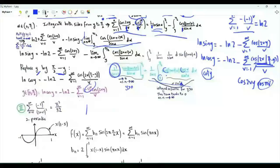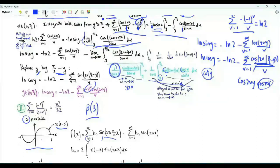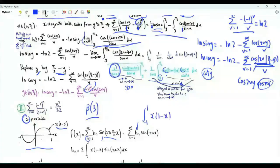Another result we need is the Dirichlet beta function evaluated at 3. One way to obtain it is to compute the Fourier series of the periodic function of period 2, which on the interval from −1 to 1 is f(x) = x(1−x). This is an odd function, so the Fourier series contains only sine functions: sin(2πn/2 · x). The coefficient b_n equals 2 divided by the period (which is 2), times the integral of x(1−x)·sin(πnx) from −1 to 1.